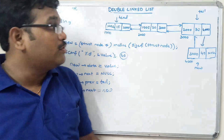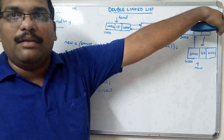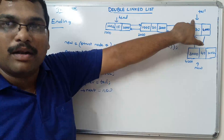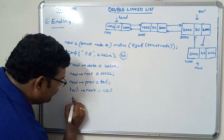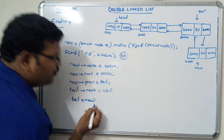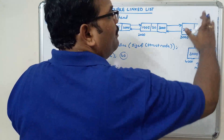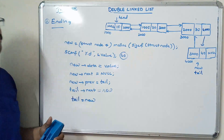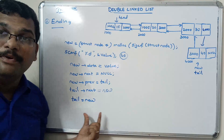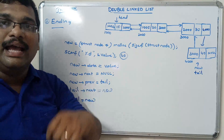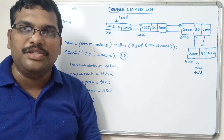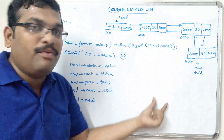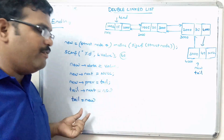Finally, we move the tail pointer to the new node: tail = new. This is the simple logic for inserting an element at the end position. If you draw the diagram and trace it step by step, the code becomes very straightforward.